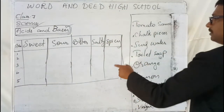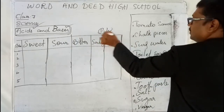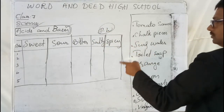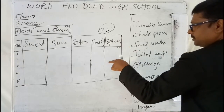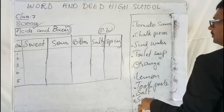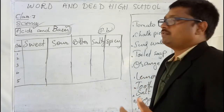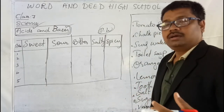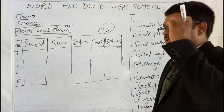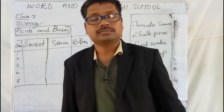I have given the table as a project work. I want you to do it on your own and present it in our WhatsApp group. How can we find if something is an acid? How can we find if it is a base? We will discuss that in the next class, children. That is all for today — thank you for listening, thank you one and all.